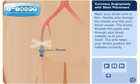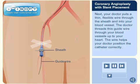Next, your doctor puts a thin, flexible wire through the sheath and into your blood vessel. The doctor threads this guide wire through your blood vessels up to your heart. The wire helps your doctor position the catheter correctly.